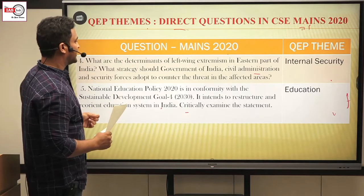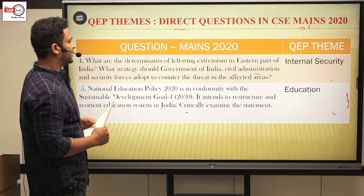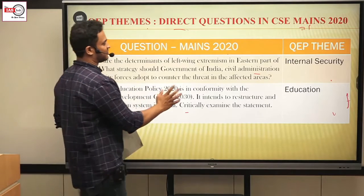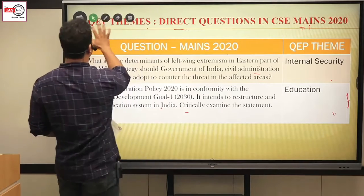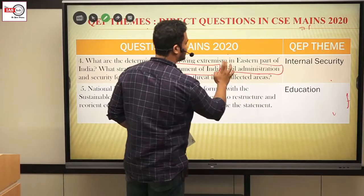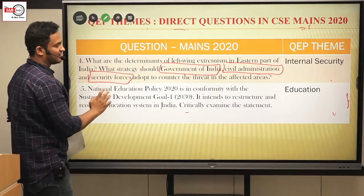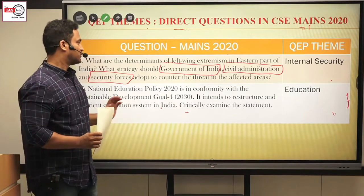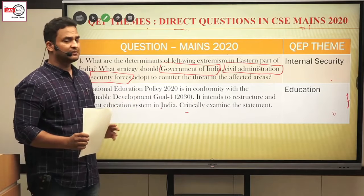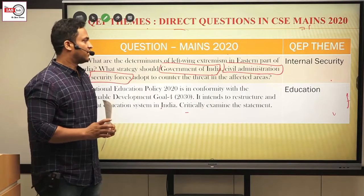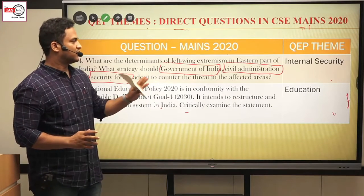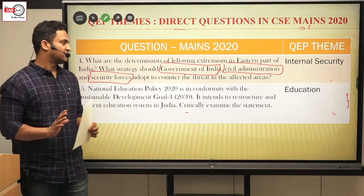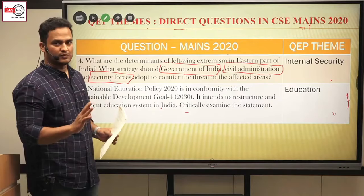For the strategy question — what government, civil administration, and security forces should do — the whole left-wing extremism topic was discussed in a similar structured manner. Under Government of India: schemes like the Samadhan scheme to do away with left-wing extremism. Under civil administration: building schools and roads, maintaining them, and engaging with local people. Under security forces: case studies like the Greyhounds and Cobra forces were all given. It was directly from QEP notes.